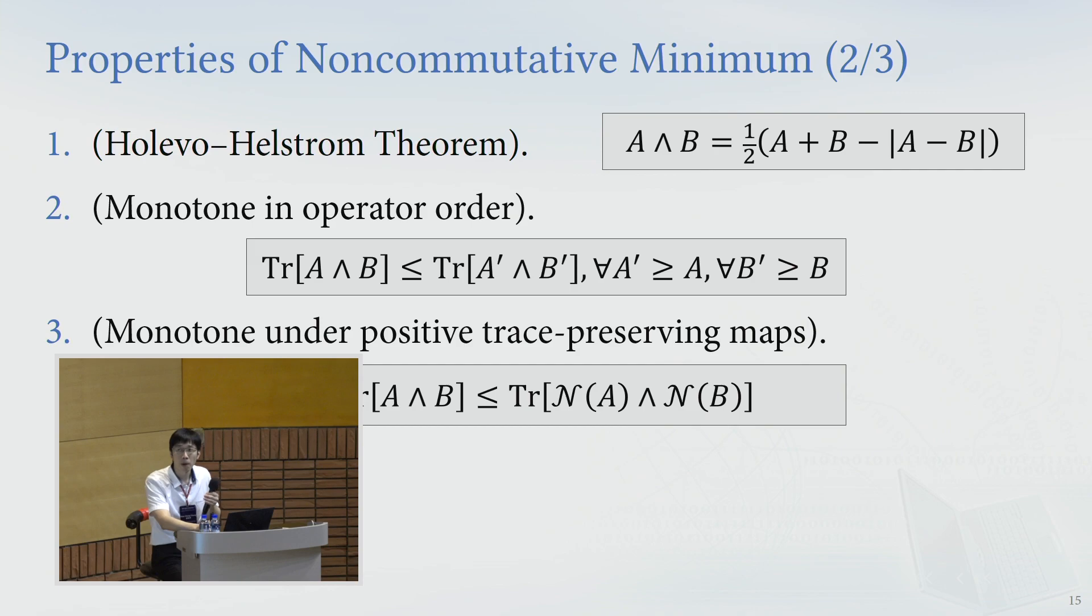And it is monotone under positive trace preserving maps because after taking trace, there's a trace norm, and trace norm is contracted under positive trace preserving maps, so it's very easy to see that.